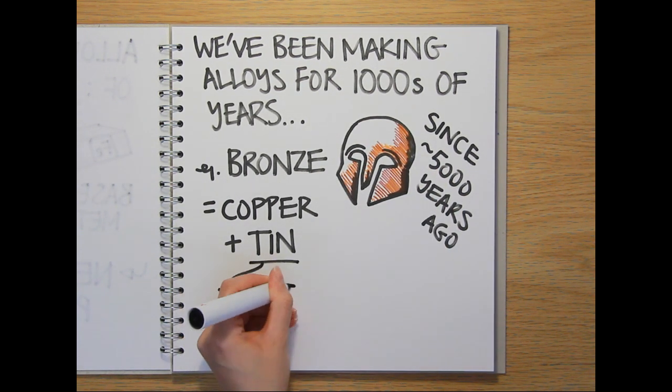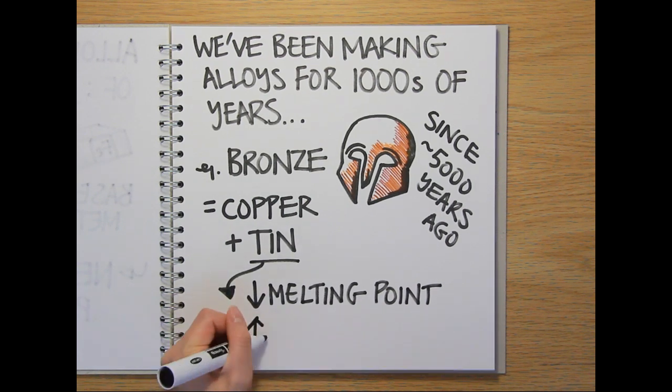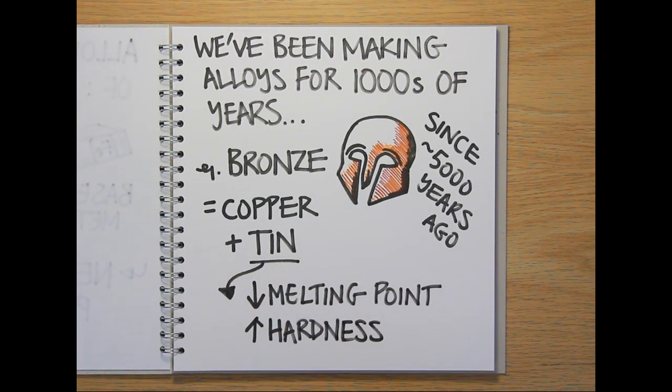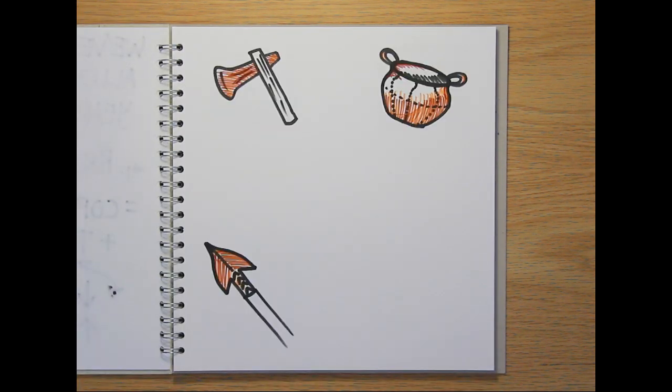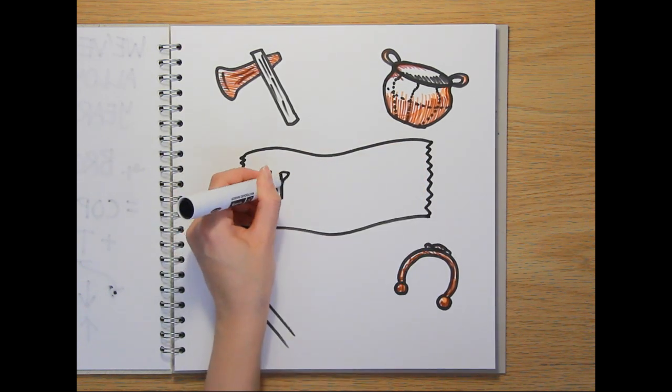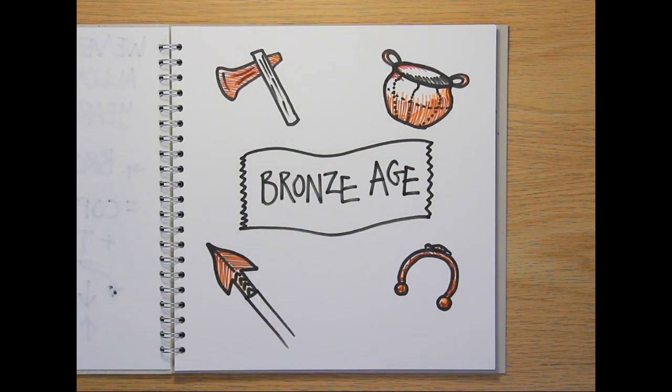Adding tin to the copper reduces the melting point and results in a stronger, harder product that's easier to cast and is better for turning into tools and weapons than copper on its own. After its discovery, the benefits of bronze meant that its use was so widely adopted that it gave its name to that era of human history, the Bronze Age.